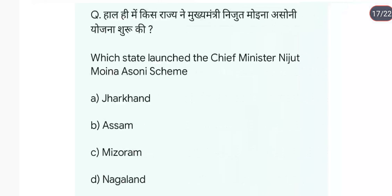Which state recently launched the Chief Minister Nijut Moina scheme? It was launched by Assam to stop child marriage by 2026. Under this scheme, financial support will be provided for girls' education.